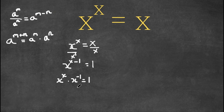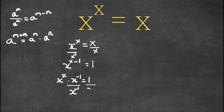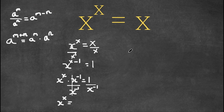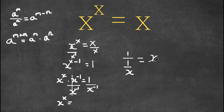Now if I divide both sides by x to the power of negative 1, those two would cancel out. So I would get x to the power of x is equal to 1 over x to the power of negative 1. And 1 over x to the power of negative 1 is the same thing as 1 over x to the power of 1, which is 1 over x. And 1 over 1 over x — well, 1 over x to the power of negative 1 is simply x. So now we get x to the power of x is equal to x.